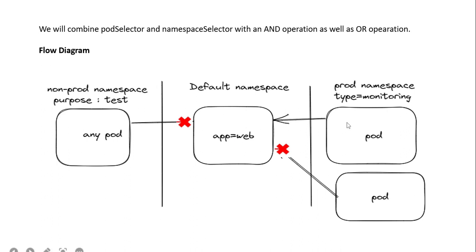Other pods cannot communicate because I am not mentioning the labeling for them. So only the one specific pod is able to communicate; all others cannot. We will see this in the manifest file on the next slide.